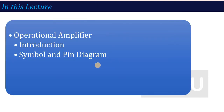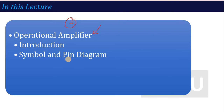Now we are starting unit number 3 — again a very important and easier unit as compared to the previous one. Why do I say easier? Because Op-Amp is my favorite, and that is Operational Amplifier, which we are going to talk about in this lecture. We will see the basics — what is an Operational Amplifier, what is the symbol, and the pin diagram, because it is an IC. Let's start our lecture on Basics of Operational Amplifier.